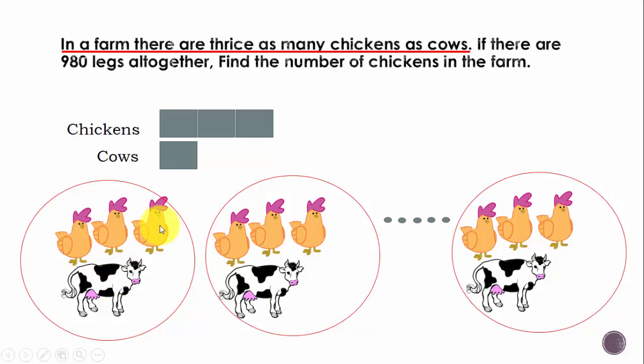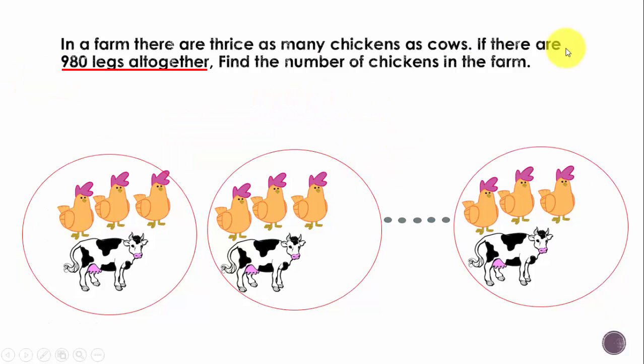Now if there are 980 legs altogether, so we know that for this particular group: 4 legs for the cow, 2 plus 2 plus 2 which is 6 for the chickens, so 4 plus 6 equals 10 is the number of legs in this group.